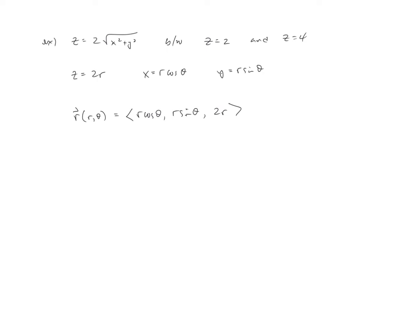Now, we can't forget the bounds, though. So we know that r has to be bounded by something, and we also know that theta has to be bounded by something. The theta is pretty straightforward, zero to two pi. The r, on the other hand, we have to somehow use the z equals two and the z equals four.